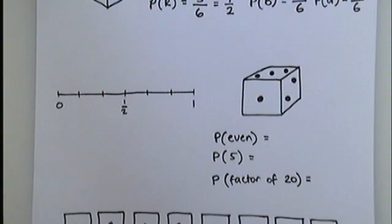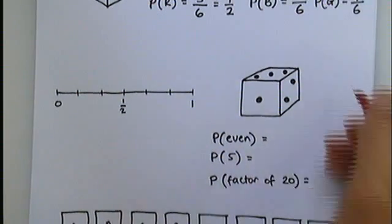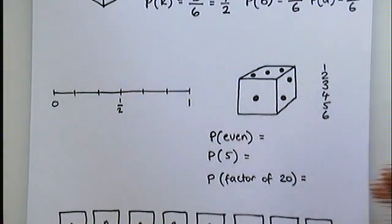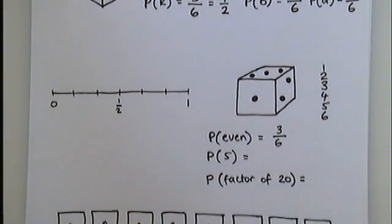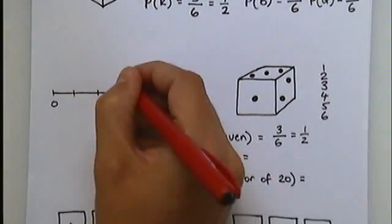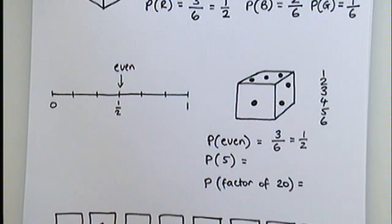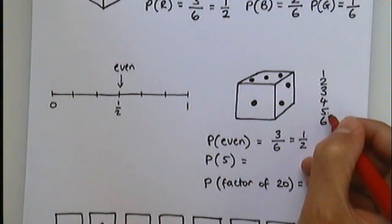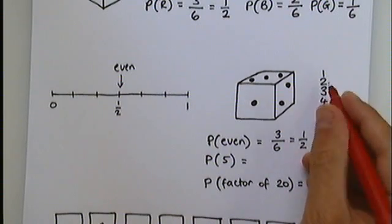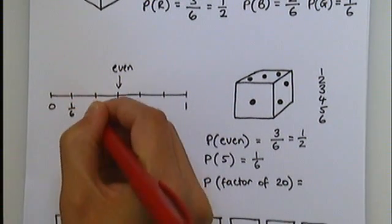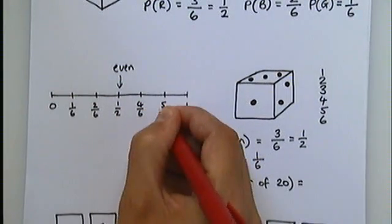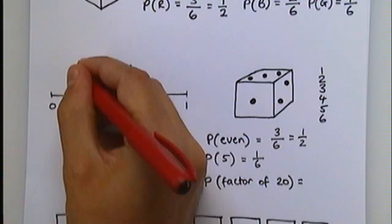Let's have a look at this dice. A normal dice, and we want to know the probability of getting an even number. There are six possible outcomes on a dice, so my fraction is out of six. How many even numbers are there? One, two, three even numbers. Three out of six can be simplified, so the probability of getting an even number sits at one half on the number line. The probability of getting a five — there's only one way of doing it, one side which shows a five, out of six — so the probability of getting a five is 1 out of 6.